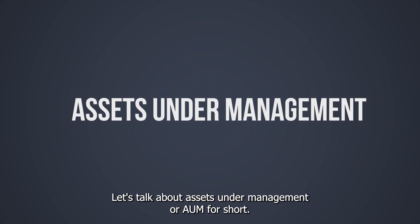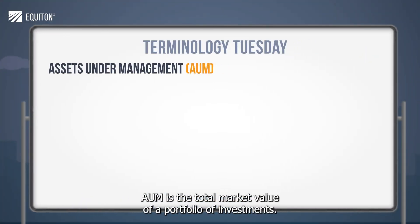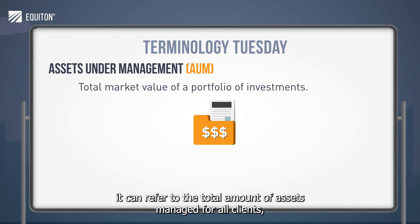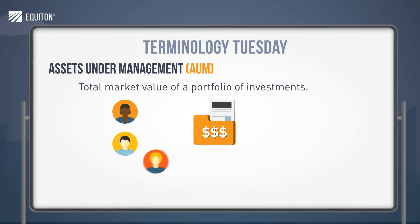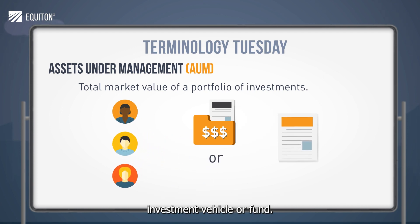Let's talk about Assets Under Management, or AUM for short. AUM is the total market value of a portfolio of investments. Often used to indicate the size or amount, AUM can be used in more than one way. It can refer to the total amount of assets managed for all clients, or it can refer to the assets managed in a specific investment vehicle or fund.